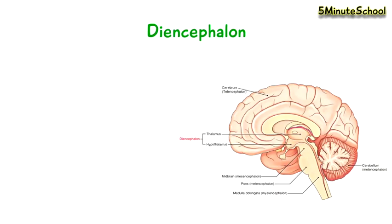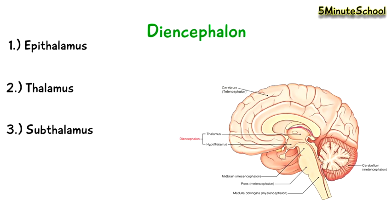The diencephalon is another component of the brain and it's mostly hidden from view when you're looking from an outside view. You can divide the diencephalon into four parts: the epithalamus, the thalamus, the subthalamus, and the hypothalamus. It's hard to describe the exact function of the diencephalon because of these four substructures, but they all have different functions.